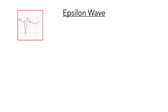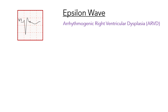An epsilon wave is an ECG finding associated with the condition known as arrhythmogenic right ventricular dysplasia, or ARVD, which is a genetic disorder that affects the heart muscle, particularly the right ventricle. ARVD can lead to ventricular arrhythmias and sudden cardiac death, making the identification of epsilon waves clinically significant.